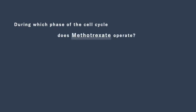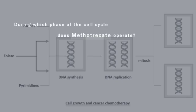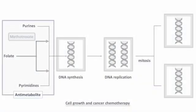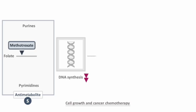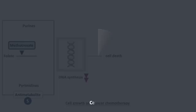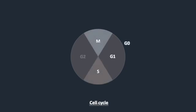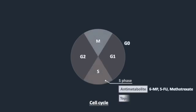During which phase of the cell cycle does methotrexate operate? Methotrexate acts as an antimetabolite to folate, a crucial component involved in DNA synthesis. Methotrexate functions during the S-phase of the cell cycle.